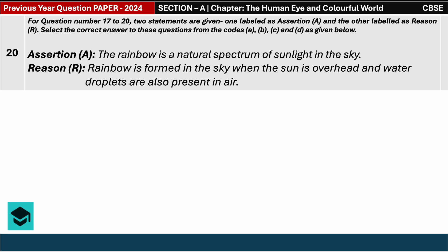We have an assertion and reason based question. They are stating the rainbow is a natural spectrum of sunlight in the sky. Yes, indeed it is a natural spectrum of sunlight, no doubt. That is true, so we can state the assertion is true. Then the reason is given: rainbow is formed in the sky when sun is overhead and water droplets are also present in air.